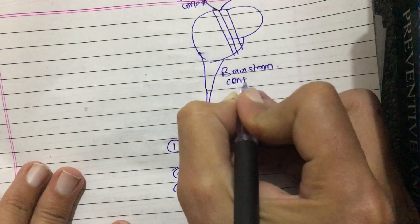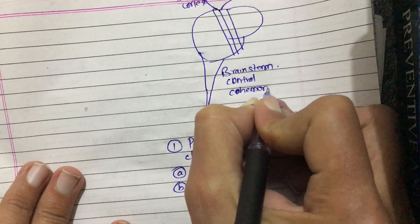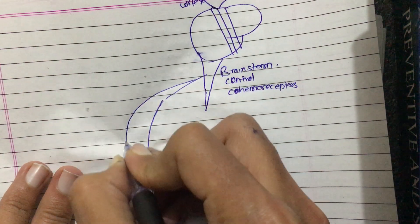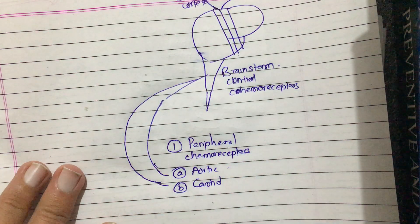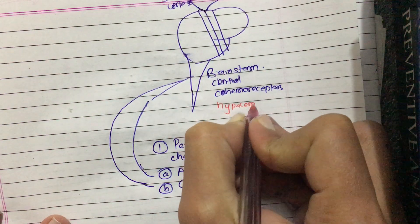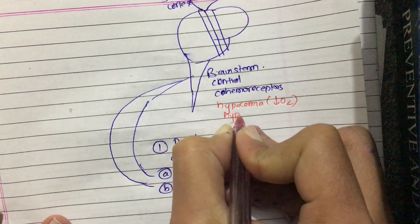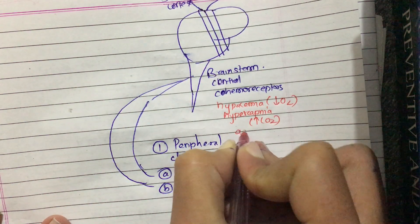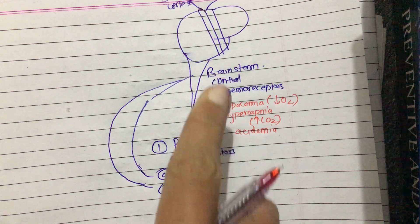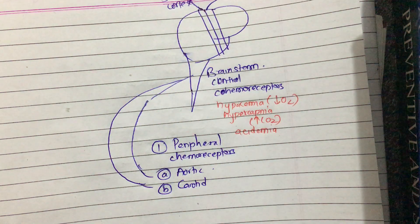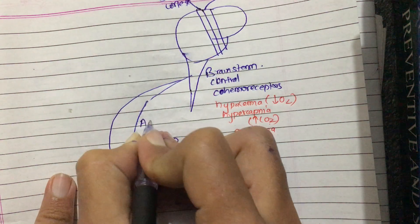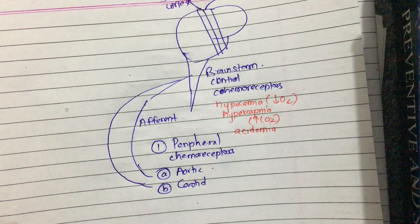The peripheral chemoreceptors — the aortic body and carotid body — send afferent signals to the central chemoreceptors present in the brainstem. If there is hypoxemia (low oxygen), hypercapnia (high carbon dioxide), or acidemia, then dyspnea occurs via these motor pathways. The aortic and carotid chemoreceptors take afferent fibers to the central chemoreceptors, and these are responsible for the sensation of air hunger.